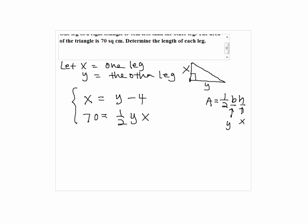We're going to solve the system by substituting y minus 4 into the x in the second equation. We have 70 equals one-half y times y minus 4.